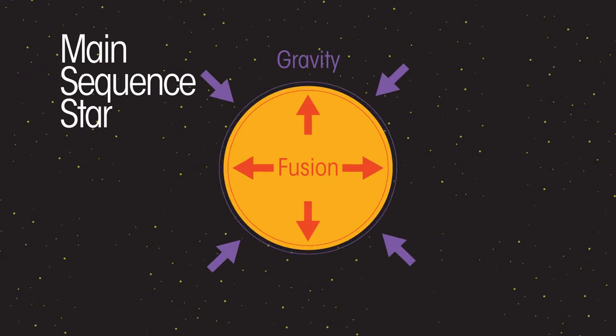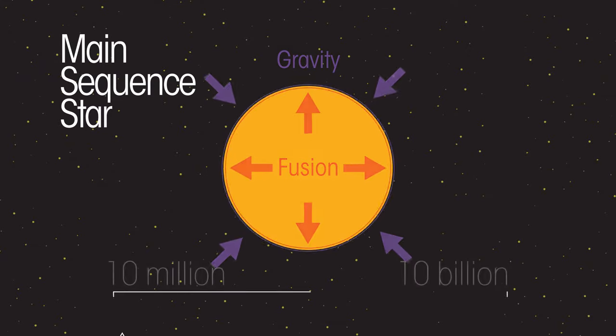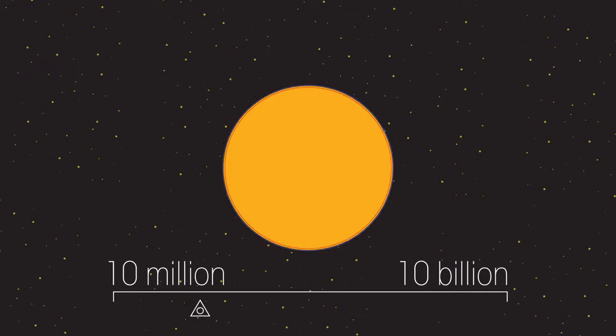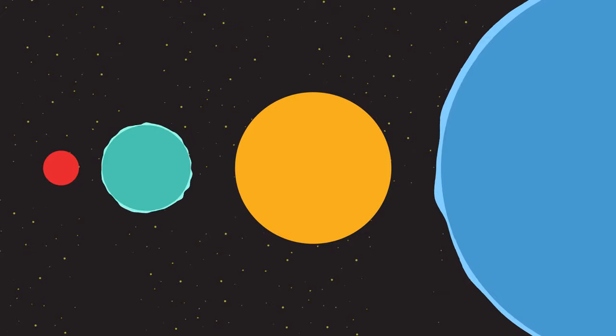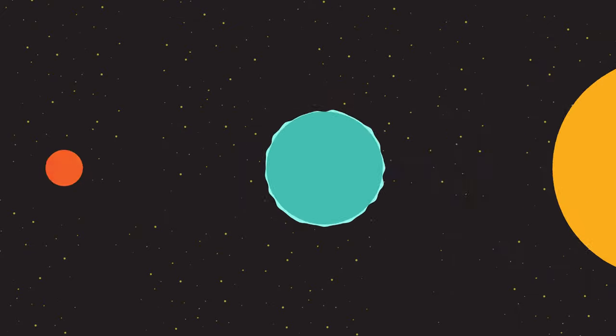The star is now called a main sequence star and it stays in this state for between 10 million and 10 billion years. What happens next depends on the size of the star. Let's talk about a smaller star first, one roughly the size of our Sun.